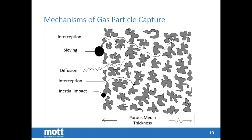Sieving is one capture mechanism for very large particles. For very small particles, diffusion is the primary mechanism — the natural motion of very small particles that eventually brings them into contact with the filter material. Interception captures medium-sized particles through the tortuous path of the filter media. Inertial impaction applies to the next larger size up, where the particle's mass and momentum carry it straight into the filter media and out of the gas stream.